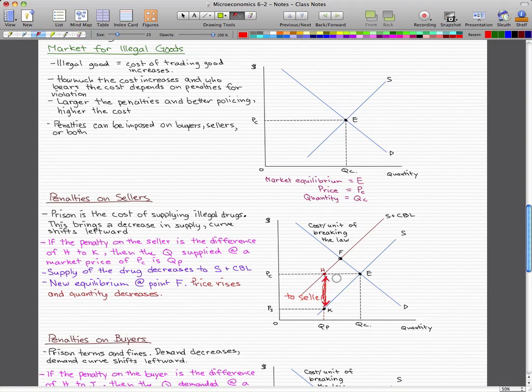So with this penalty, the quantity supplied at the market price of PC is QP and not QC, because now we have a penalty to deal with. The supply of the drug decreases to S plus CBL, CBL being the cost of breaking the law, and the new equilibrium point is at point F. At point F, we see that the price actually rose and the quantity decreased.